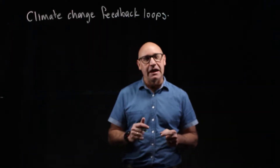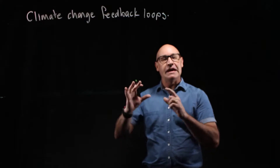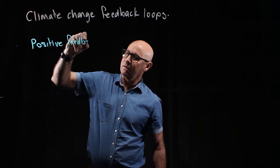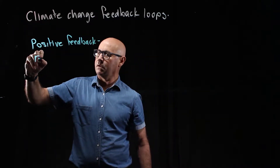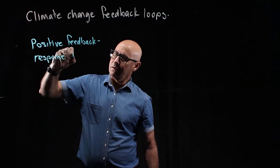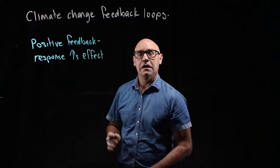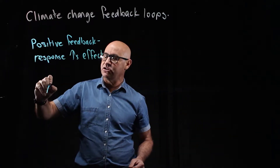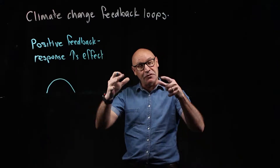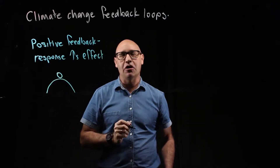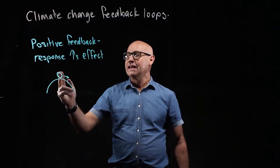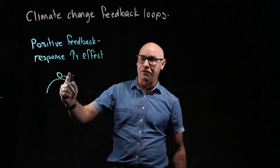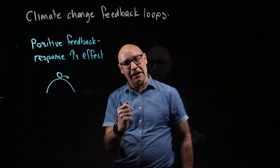A positive feedback loop is a loop where the response increases the effect. The classic way to think about this is if you imagine a ball placed upside down with another ball on top. The effect of moving that ball away from the midline means it will continue to accelerate faster and faster — the response is increasing the effect.